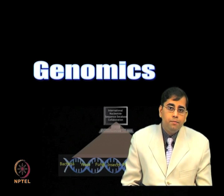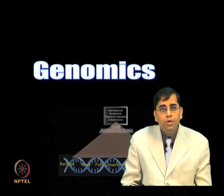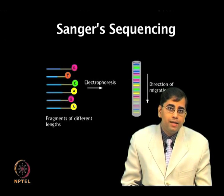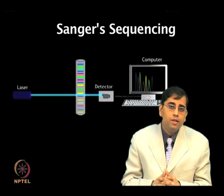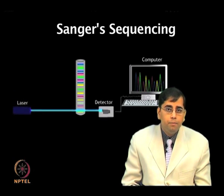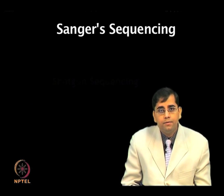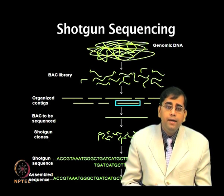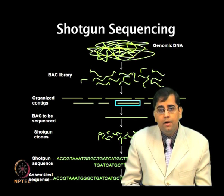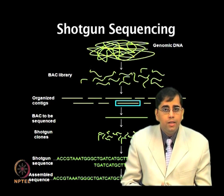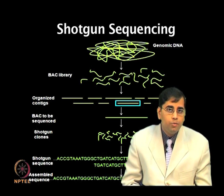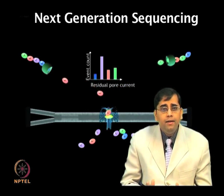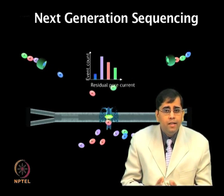Studying the genome of an organism by employing sequencing and genome mapping is known as genomics. Several genome sequencing projects that aim to elucidate the complete genome sequence of organisms have been undertaken by research groups all over the world. From a genomic library, clones were isolated and ordered into a detailed physical map. Individual clones were then sequenced by shotgun sequencing to provide the complete genome sequence. Recently, next-generation sequencing strategies have dramatically increased the pace of sequencing by several orders of magnitude.